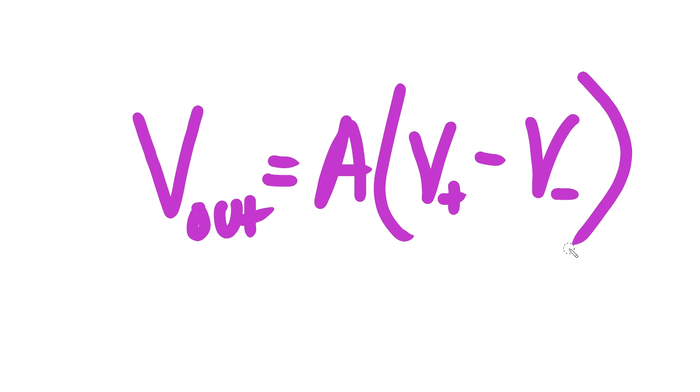How the op-amp works is pretty simple. It just takes the difference between two inputs and amplifies that difference and sends it to the output. Now that's not necessarily all the gory details, but that leads to something pretty important when it comes to electric circuits: the idea of abstraction.